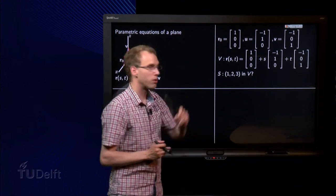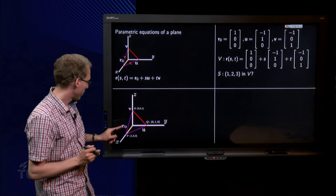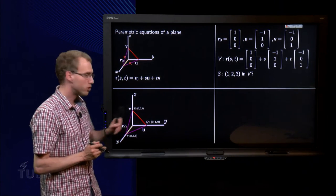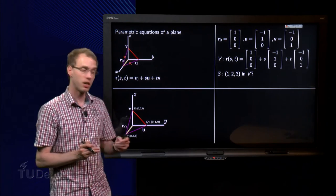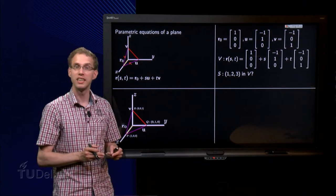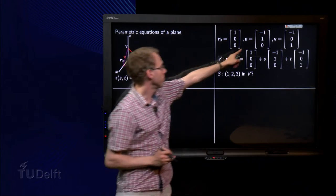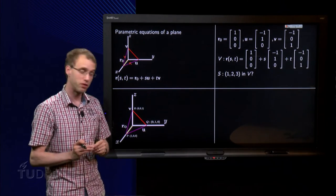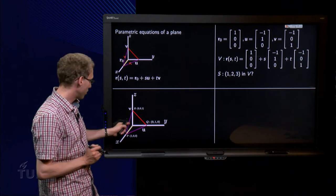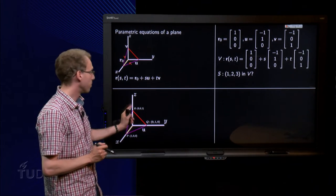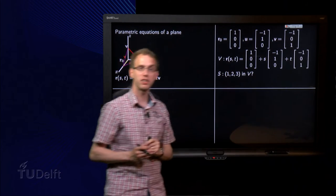What about u? u is going from P to Q, so we go minus one step in the x-direction, one step in the y-direction and zero steps in the z-direction. There we have u. What about v? We go minus one step in the x-direction, zero steps in the y-direction, and one step up. So there we have our vector v.